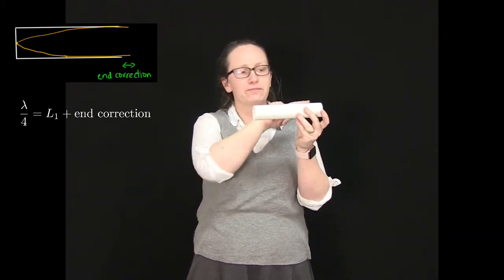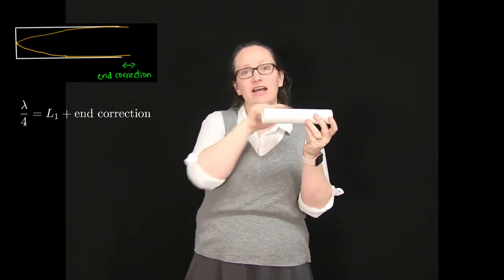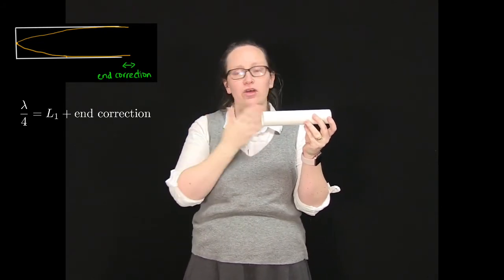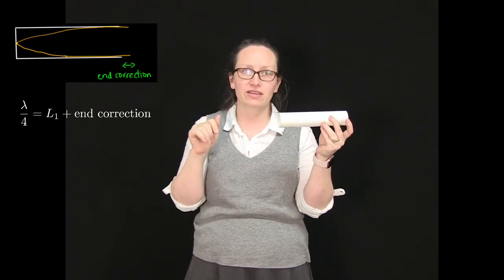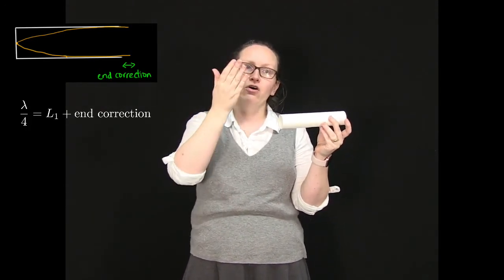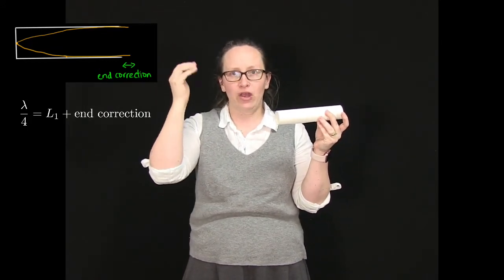If the pipe was open at two ends, then we'd have an end correction at both these ends here. So in that case for the fundamental frequency, where remember we've got half a wavelength inside the pipe, we'd write L plus 2 times the end correction is equal to lambda over 2.